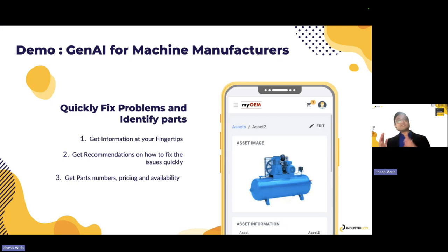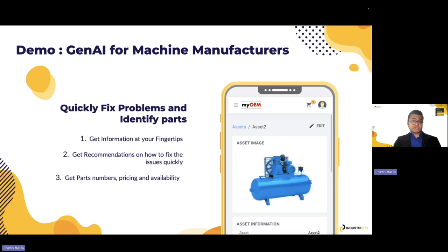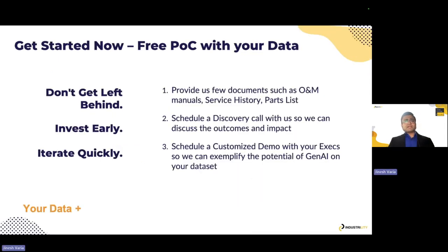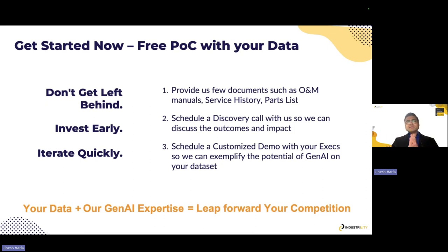What you just saw was a service technician out there in the field getting information at his fingertips, getting recommendations of maintenance, how to fix a particular maintenance task, as well as getting all the information associated with the digital twin of that asset to fix the problem quickly. We feel that this is going to be extremely powerful for not only your service technicians, but also your end owner operators or your in-house maintenance crew of your customers, to create a massive, great brand and increase your customer loyalty. So with that, I would like to pass it back to Achint to explain how to get started.